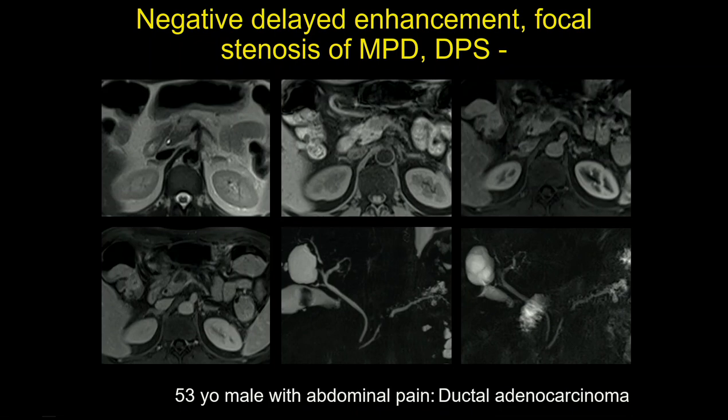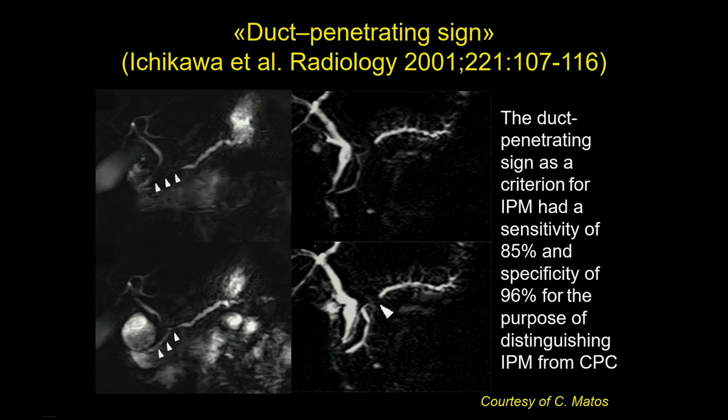Poor mass with hypoenhancement and stenosis that does not revert after secretin — the duct-penetrating sign is an important tool to make a differential diagnosis.